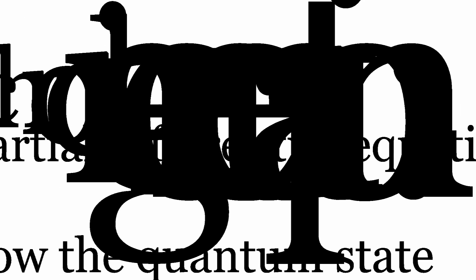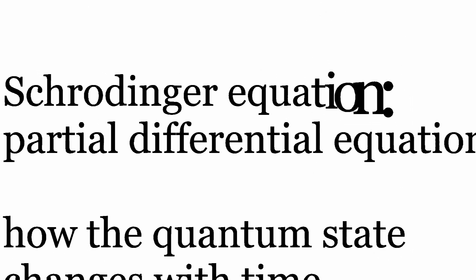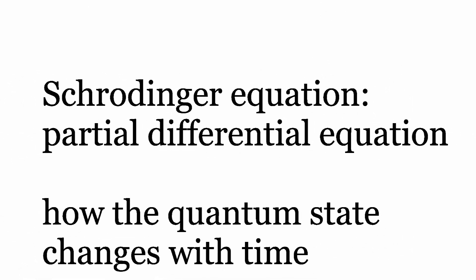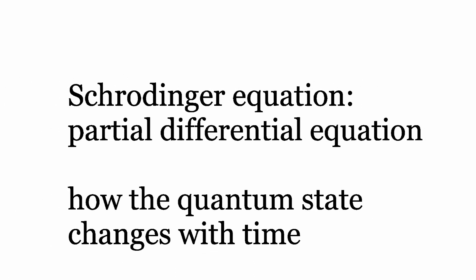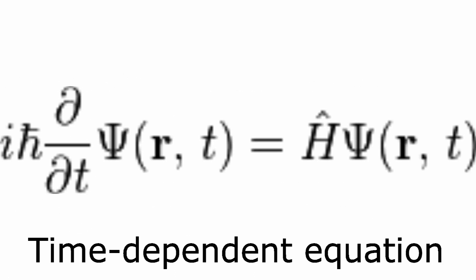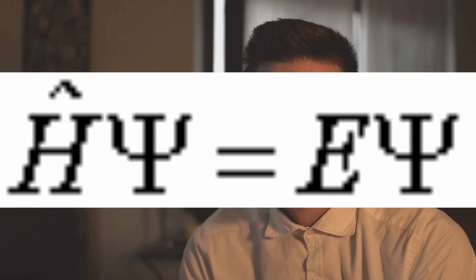In quantum mechanics, the Schrödinger equation is a partial differential equation that describes how the quantum state of a physical system changes with time. Now we can see the general Schrödinger equations, but I don't want to complicate the argument, and if someone wishes to deepen the mathematical analysis, he can study the equations.